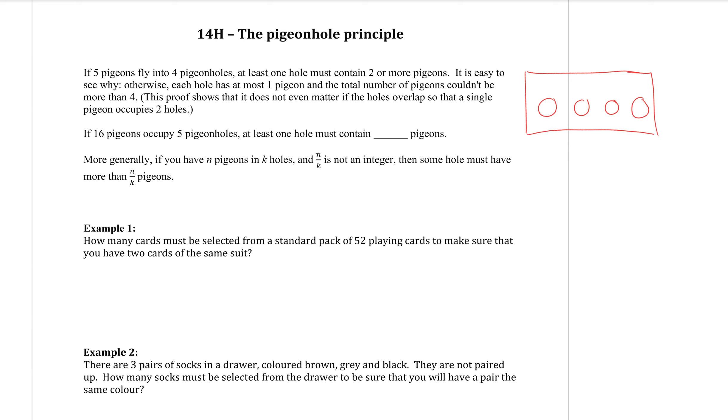At least one hole would have to have two pigeons that go through it, right? The first four pigeons that come there, technically, they could each choose a different hole. But the fifth pigeon is going to have to follow one of the other pigeons. It just can't have its own hole to go through.